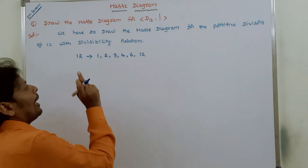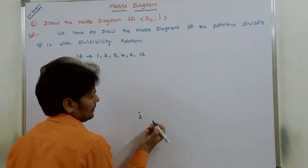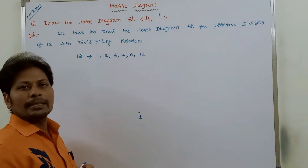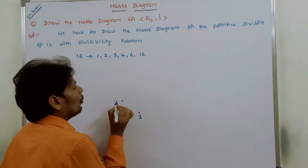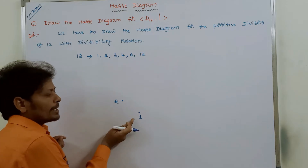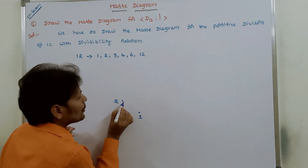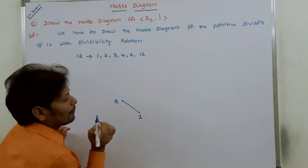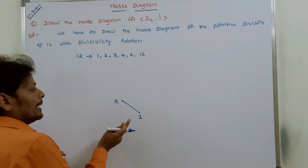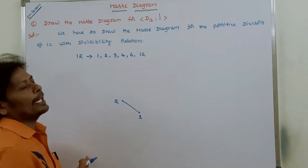Now, first I am taking 1. Next, I am taking the next positive divisor, which is 2. Since 1 divides 2, there is a divisibility relation between 1 and 2, so we have to draw an edge between them. Whenever two positive divisors have a divisibility relationship, we draw an edge between them.